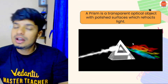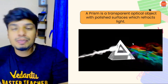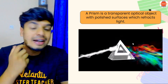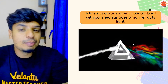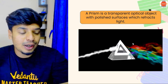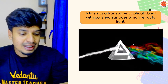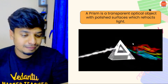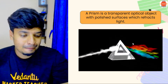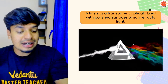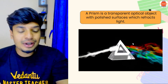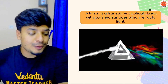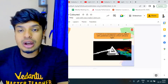Can you all tell me — dispersion happens in a prism, but what acts as a prism when there is rainfall and a rainbow is formed? It is the raindrop that acts as a prism whenever there is a rainfall.